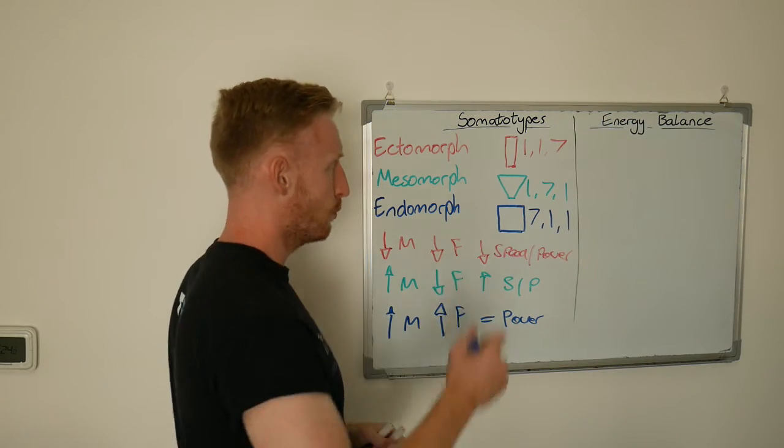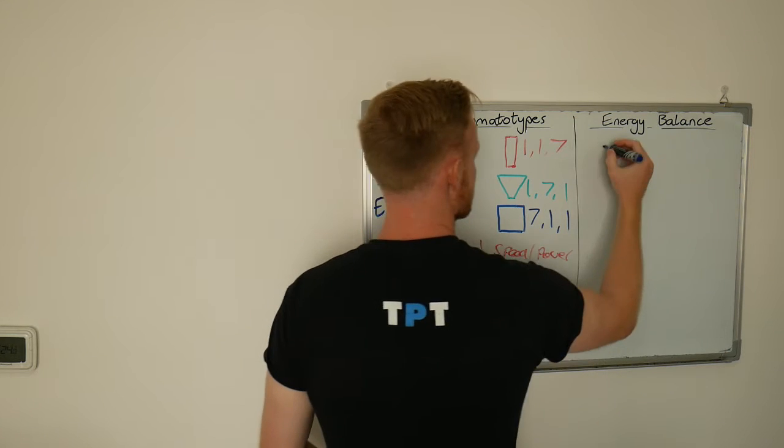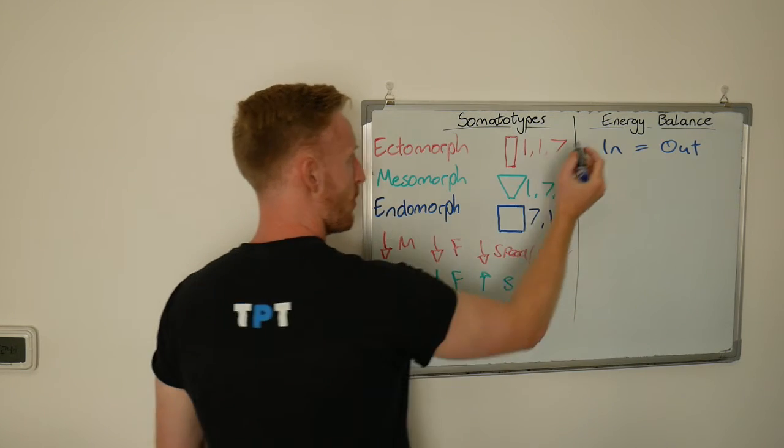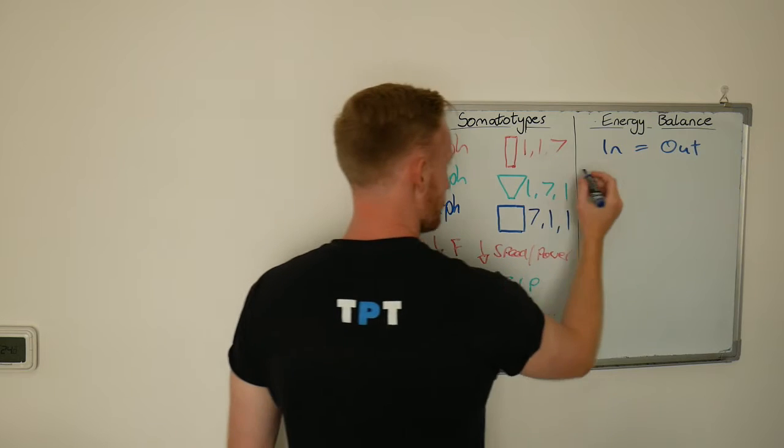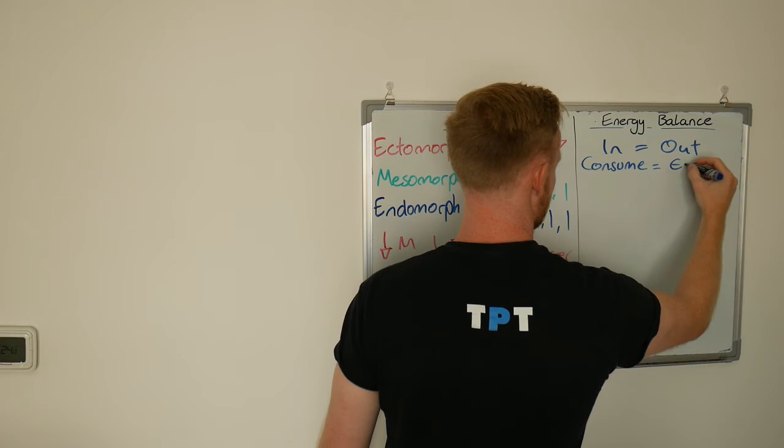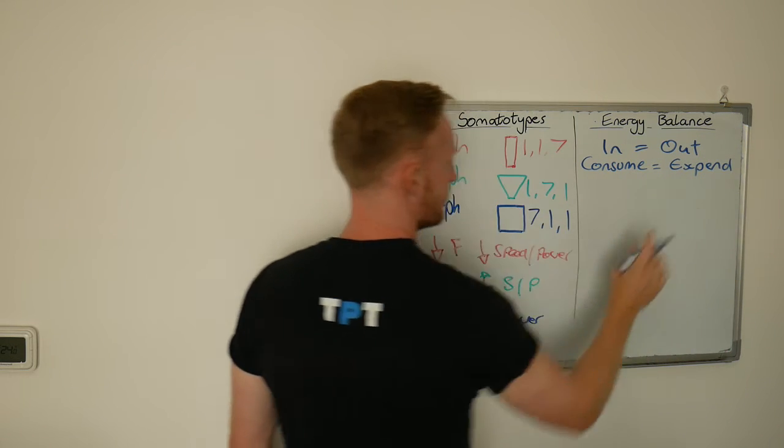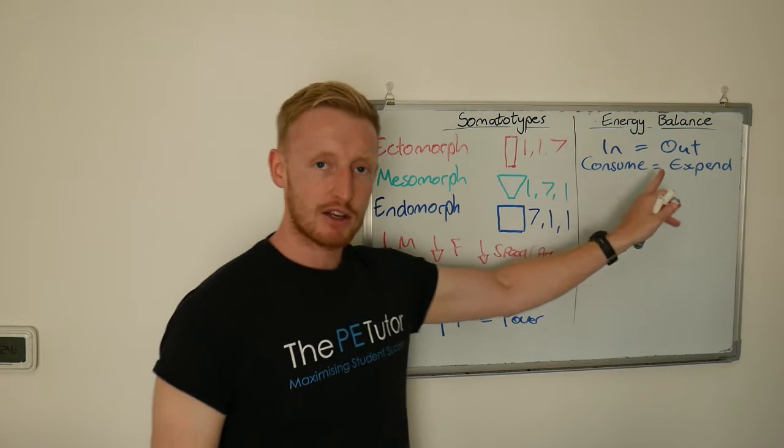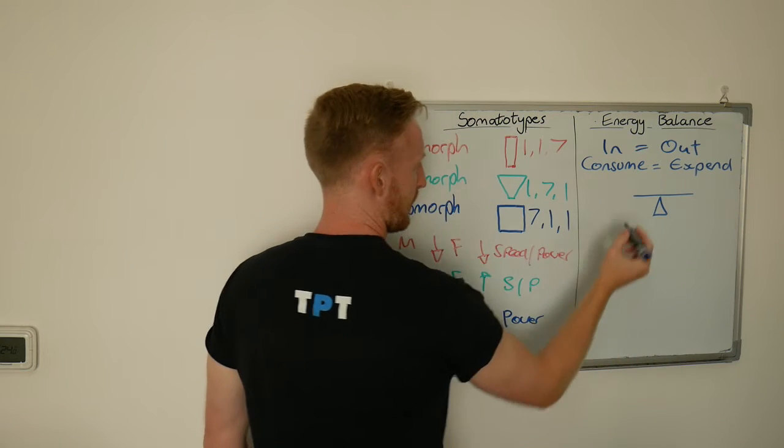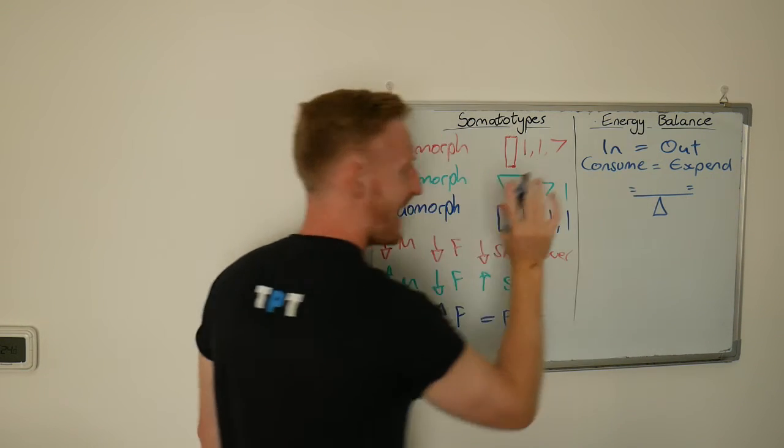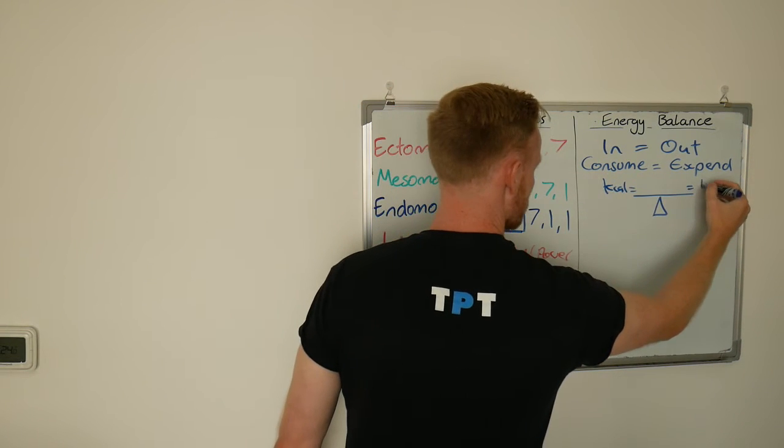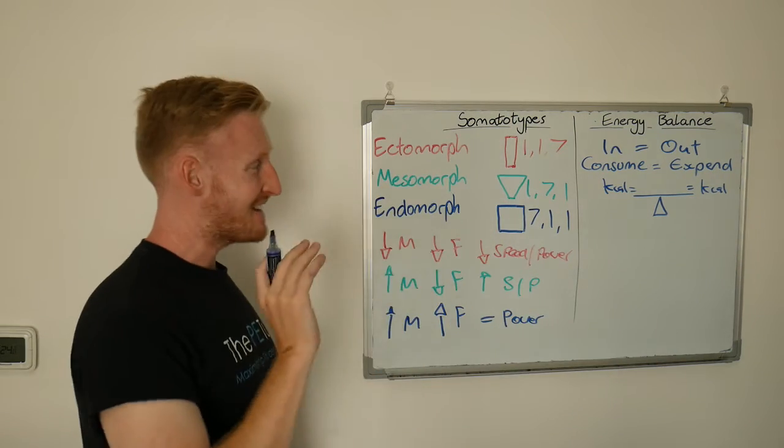So how does energy balance link to all of this? Well first of all we need to know what energy balance is. And it's in equals out. What we're referring to here is energy, consumption versus expenditure. Consume versus expend. And if these match up, just like a balancing scale, if they match up and they are equal, then we are in energy balance. If calories in, kilocalories, equals kilocalories out, then we remain in balance.